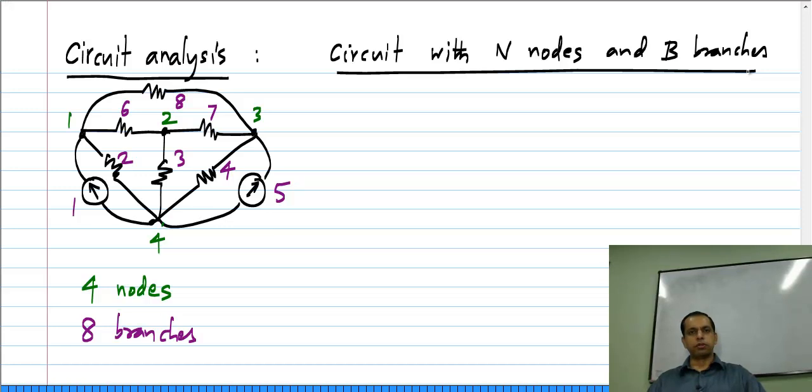Now, what is it that we want to solve? Basically, we want to solve for the current and voltage in every branch, in every element. For now, we will consider two terminal elements, but exactly the same thing can be generalized to larger number of terminals.